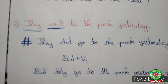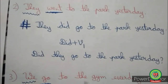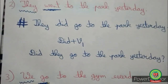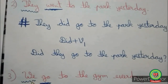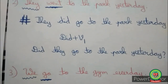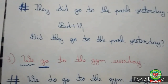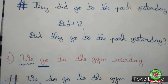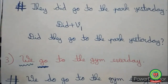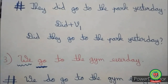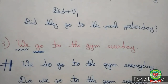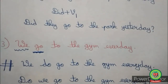See the third example: 'We go to the gym every day.' Go is the present form of verb and we is the plural subject. So we use do as the helping verb: 'We do go to the gym every day.' Placing do at the beginning: 'Do we go to the gym every day?'